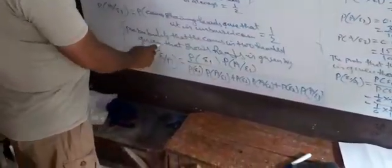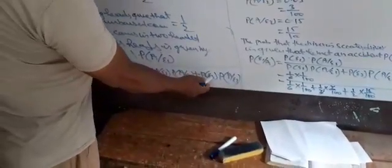The probability that the coin is two-headed given that it shows heads is given by P(E1|A) = [P(E1) × P(A|E1)] / [P(E1) × P(A|E1) + P(E2) × P(A|E2) + P(E3) × P(A|E3)].